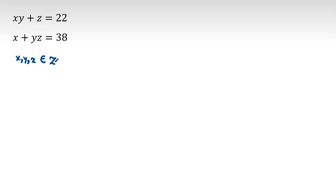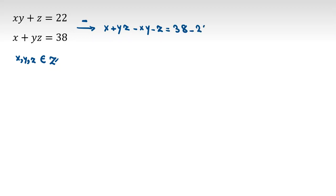When you have this type of equation, one useful way — also common in competition math — is to subtract and then factorize. So let's subtract the first one from the second one: x·y·z minus x·y minus z equals 38 minus 22, which is 16.